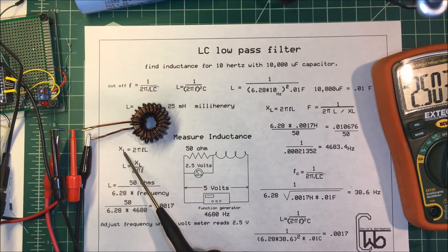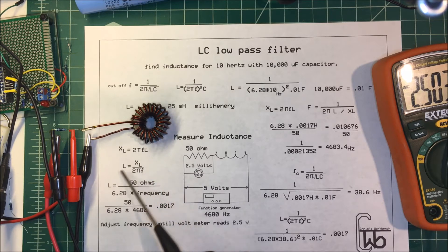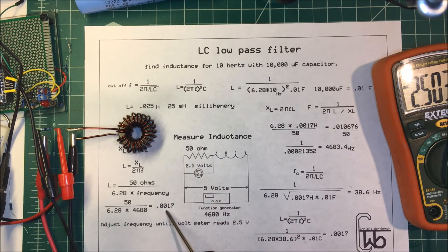We know that XL equals 2π times frequency times inductance. To solve for inductance, we rewrite the formula where L equals XL divided by 2π times frequency. We take our XL of 50 ohms and divide by 6.28 times 4,680, which comes out to 0.0017 henrys or 1.7 millihenrys.